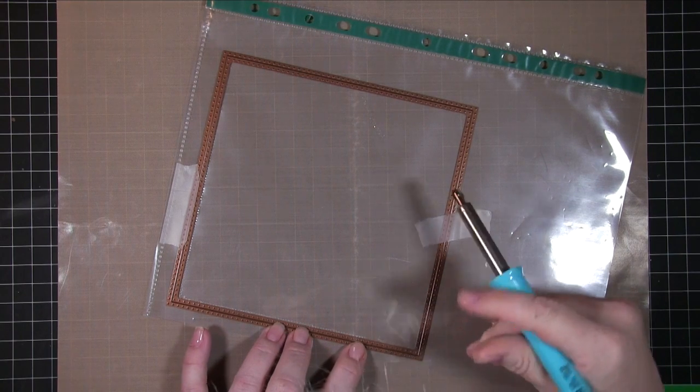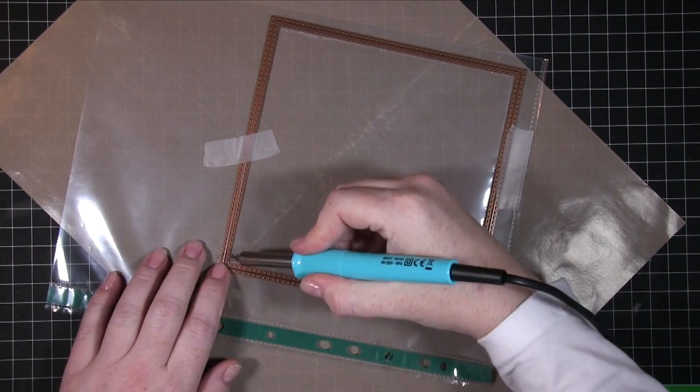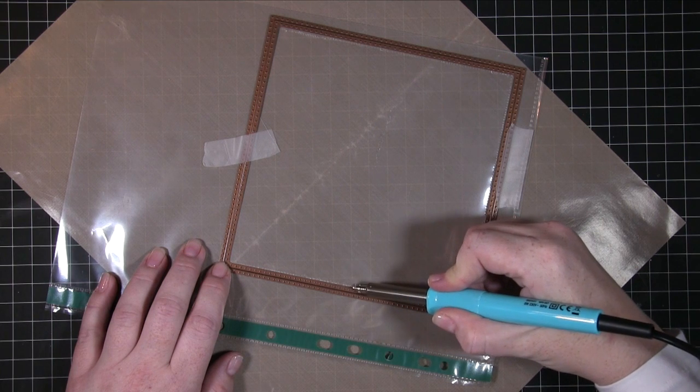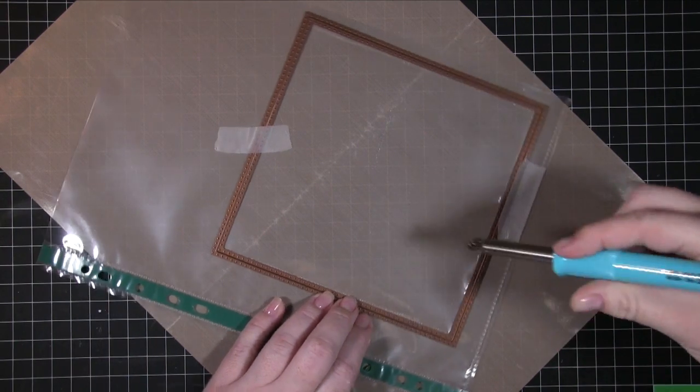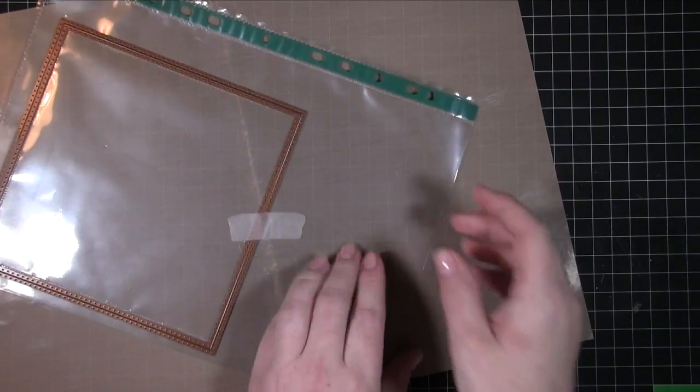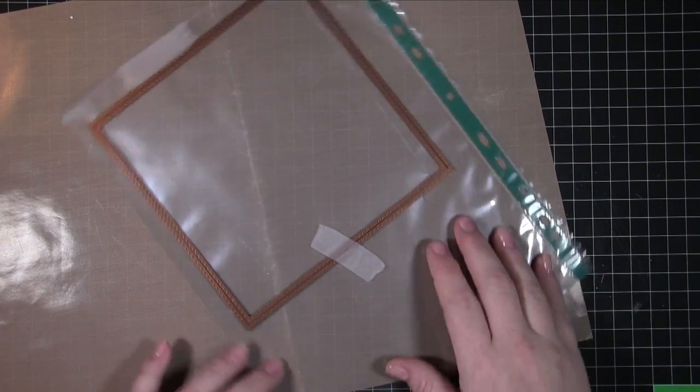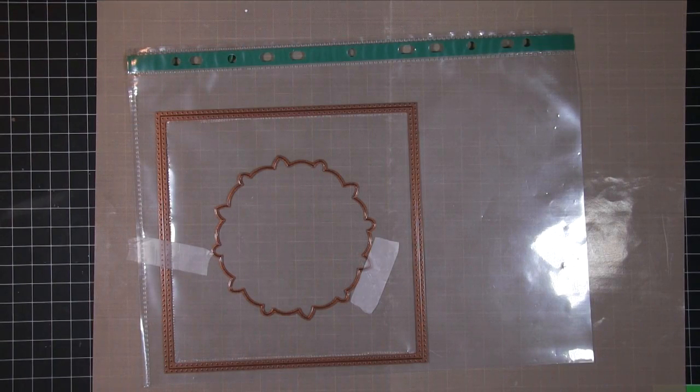Now I've die cut all the elements I need for the front. I want to create my fuse shaker pocket using the die as a guide and this plastic wallet. The fuse tool is pretty simple - it's a tool that heats up with a little roller that melts the plastic at certain points to join two layers together to create the pocket. You seal three sides to start with, add your shaker elements, and then seal the fourth side.